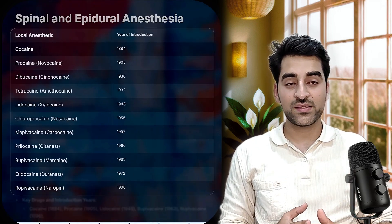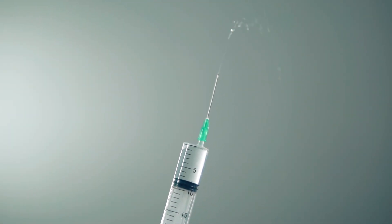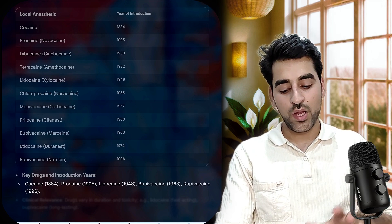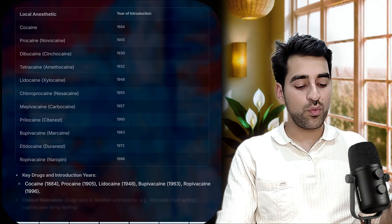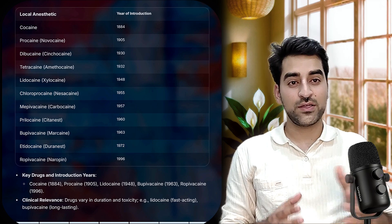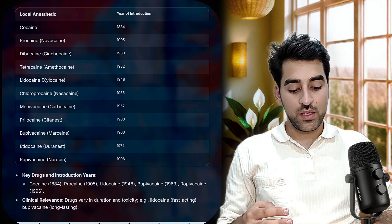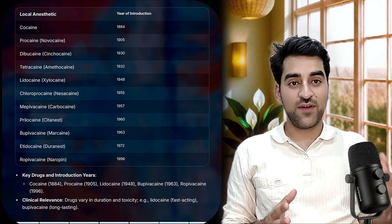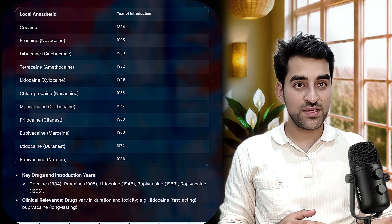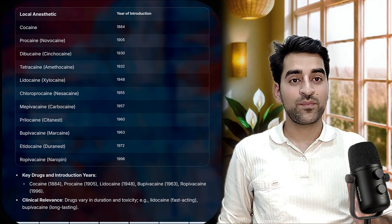Now let's look at the timeline of local anesthetics and the years they were introduced. Here is a tabular form. I'll focus on the key local anesthetics: cocaine, procaine, lidocaine, bupivacaine, and ropivacaine. These drugs have different profiles and vary in their toxicity, onset, and duration. For example, lidocaine is fast-acting with a duration of one to two hours, while bupivacaine has a slower onset and longer duration of action.